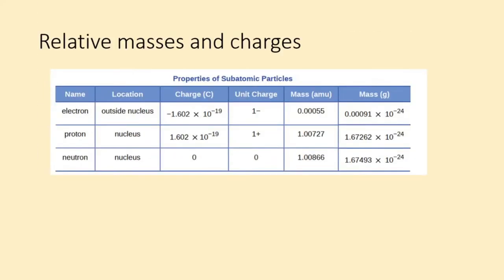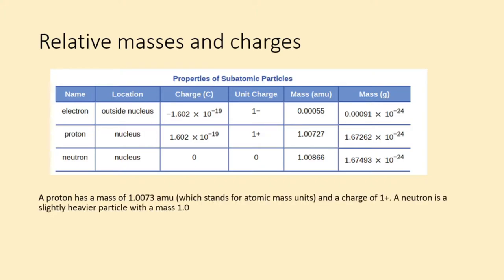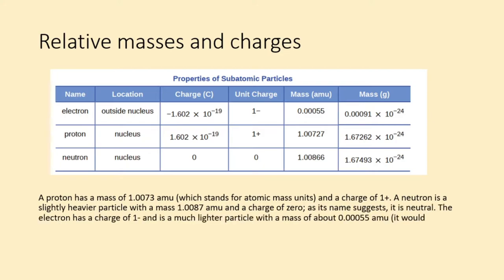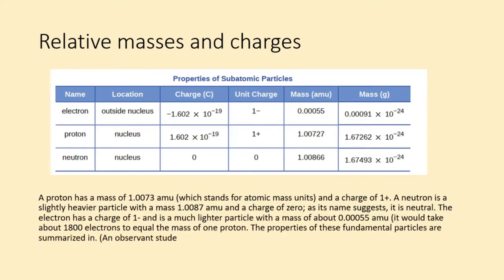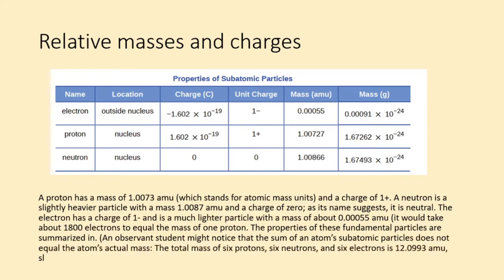A proton has a mass of 1.0073 amu, which stands for atomic mass units, and a charge of 1+. A neutron is a slightly heavier particle with a mass of 1.0087 amu and a charge of zero. As its name suggests, it is neutral. The electron has a charge of 1- and is a much lighter particle with a mass of about 0.0055 amu. It would take about 1,800 electrons to equal the mass of one proton.